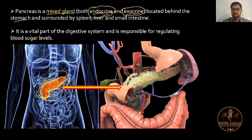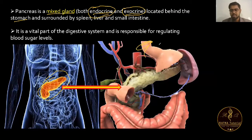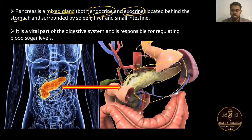To understand the location better: here is the esophagus and here is the stomach. Behind this part is the pancreas. It is surrounded by the small intestine, liver, and spleen.